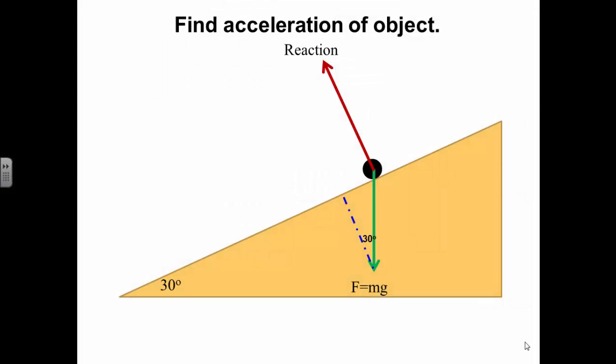Let's look at a problem like this. Same situation as before. We find the component down the slope is mg sine theta. We know the mass is 2 kilograms. G is equal to 10. So F is equal to mg sine theta. This is the unbalanced force acting down the slope which will cause an acceleration.